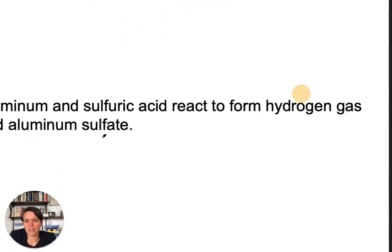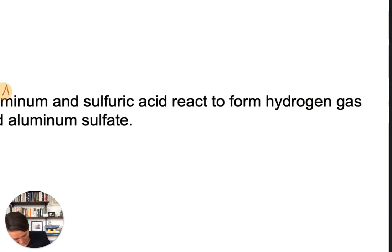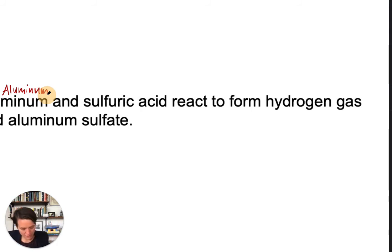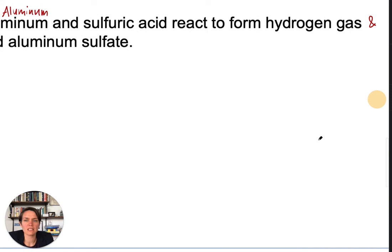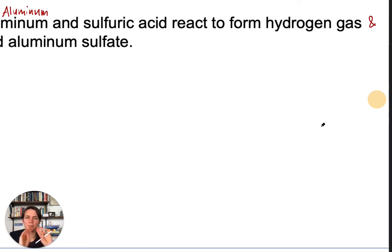This next problem says aluminum and sulfuric acid react to form hydrogen gas and aluminum sulfate. This is the kind of problem I'd ask on an exam because not only do you have to write a balanced chemical equation, you also have to know how to write formulas — pulling in pieces from chapters two and three.